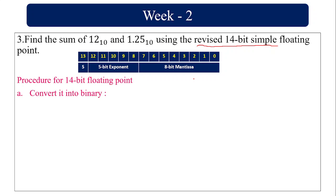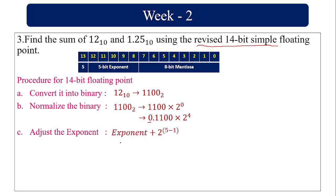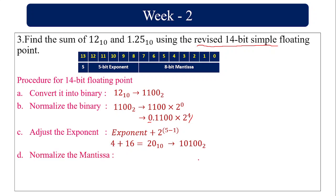The procedure for 14-bit floating point: convert 12 into binary and normalize. After normalizing to 2 power 0, the value before the decimal point should be 1. Adjust the exponent using: unadjusted exponent plus 2 power 5 minus 1. Here we have a 5-bit exponent, so 5 minus 1 equals 4. The exponent is 4, so 4 plus 16 (2 power 4) equals 20. Convert 20 into binary.